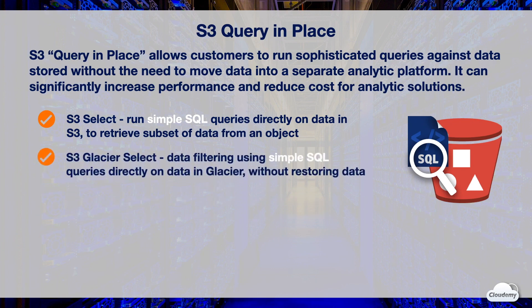S3 Glacier Select is the built-in query capability that Glacier offers. With Glacier Select, you can perform filtering operations using simple SQL queries directly on archives in Glacier, without having to restore the data.